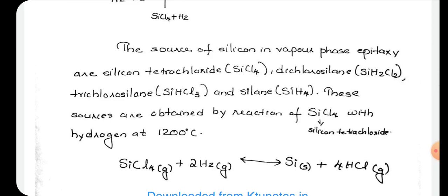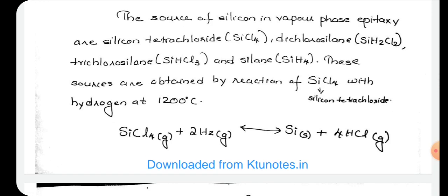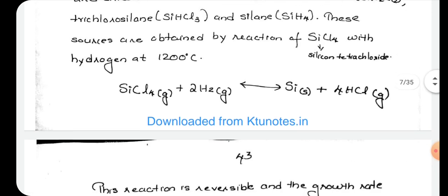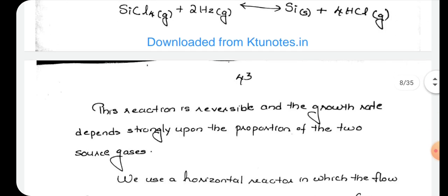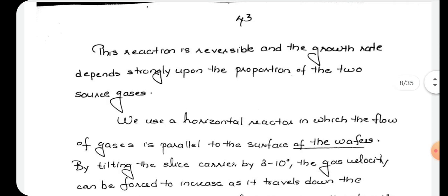The sources are obtained by reaction of SiCl4 with hydrogen at 1200 degrees Celsius. This reaction is reversible and the growth rate depends strongly upon the proportion of the two source gases.